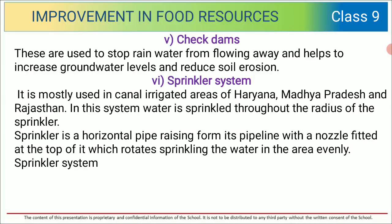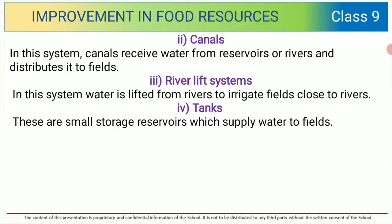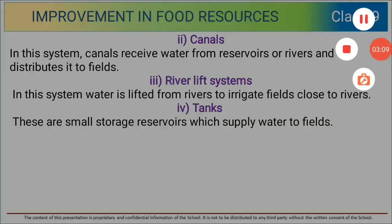In the sprinkler system, water is sprinkled throughout the radius of the sprinkler. A sprinkler is a horizontal pipe rising from its pipeline with a nozzle fitted at the top, which rotates and sprinkles water in the area evenly. So children, this was about the different irrigation techniques.